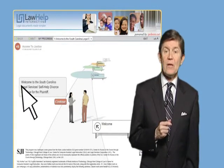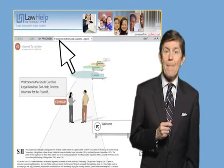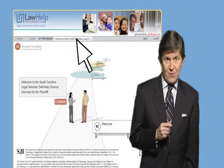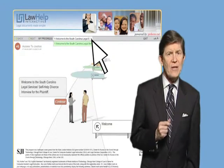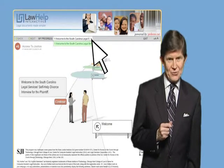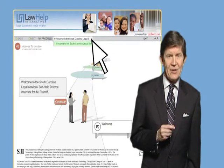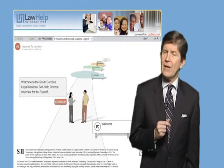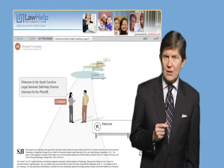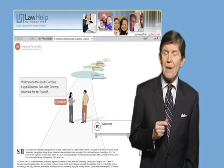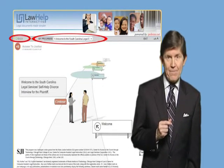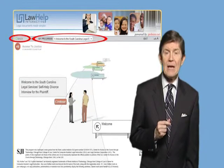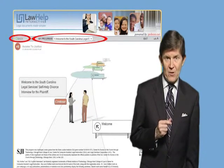At the top of the screen, you'll see the My Progress bar. If you click on the bar, you'll be able to see the question that you're on as well as the questions that you've answered. If you need to return to a previous screen for any reason, you can either use the My Progress bar, or you can click the Back button, which is located to the left of the progress bar.